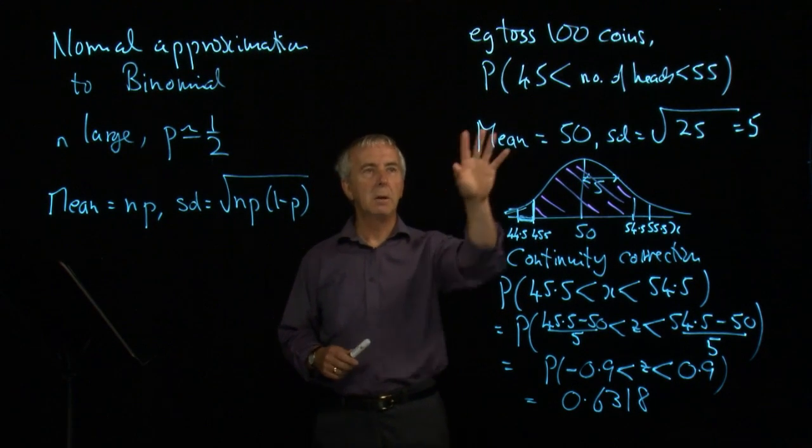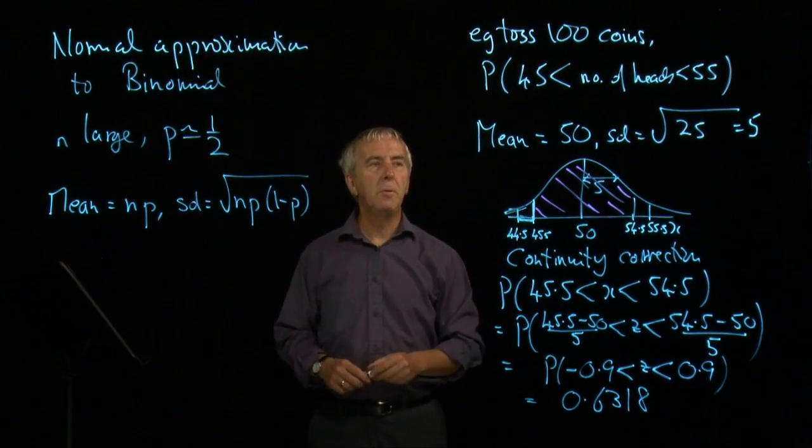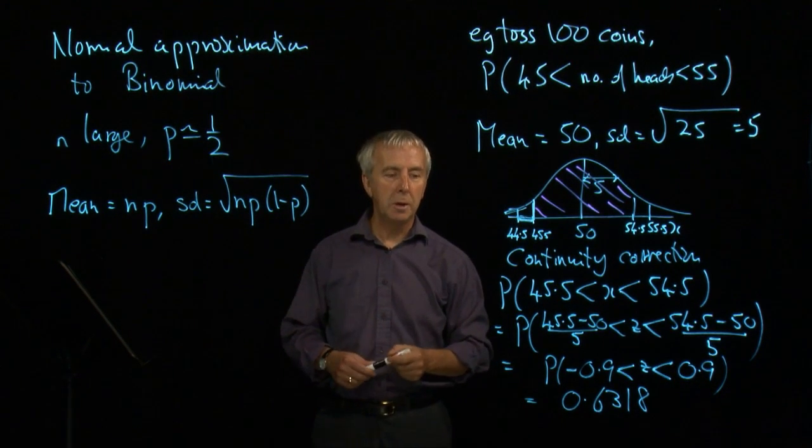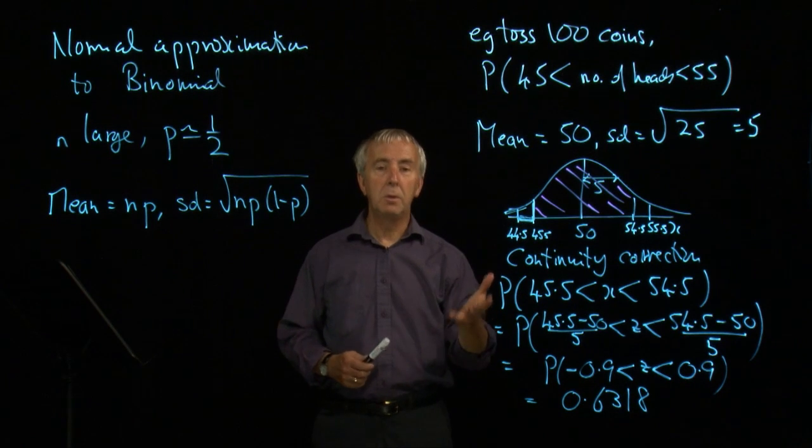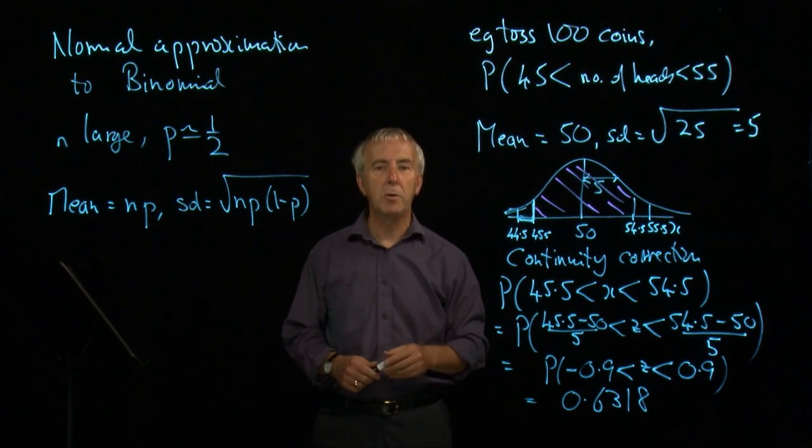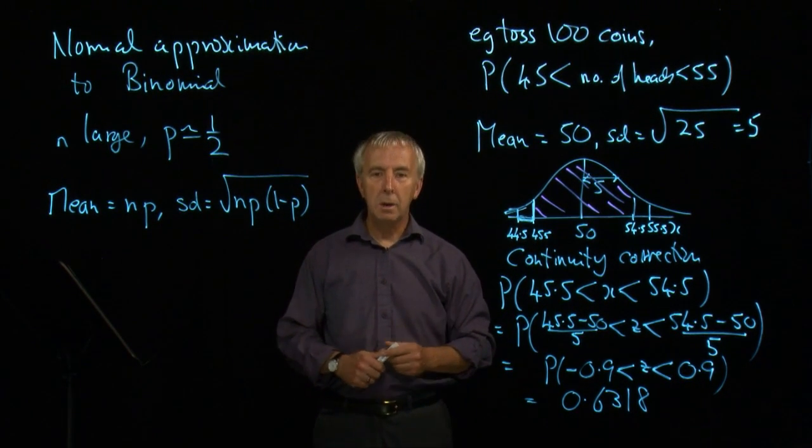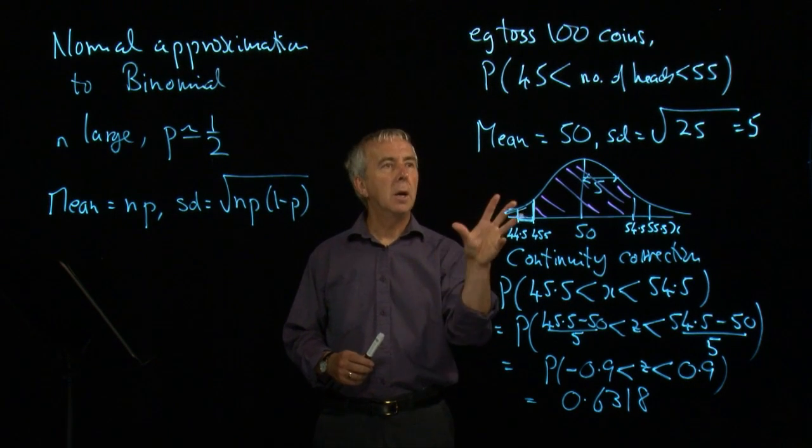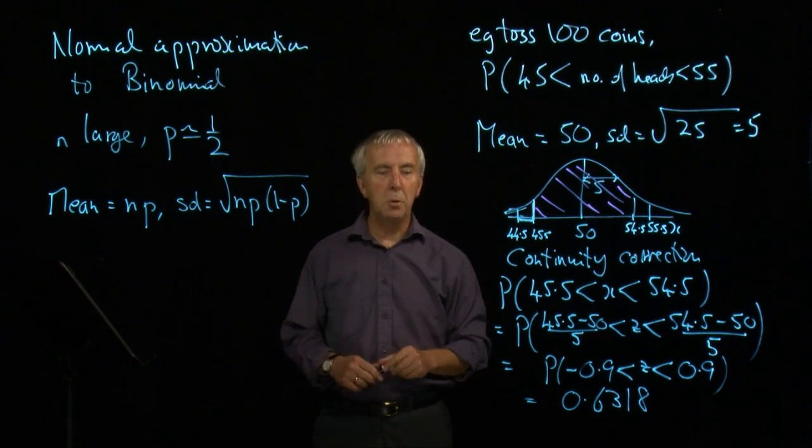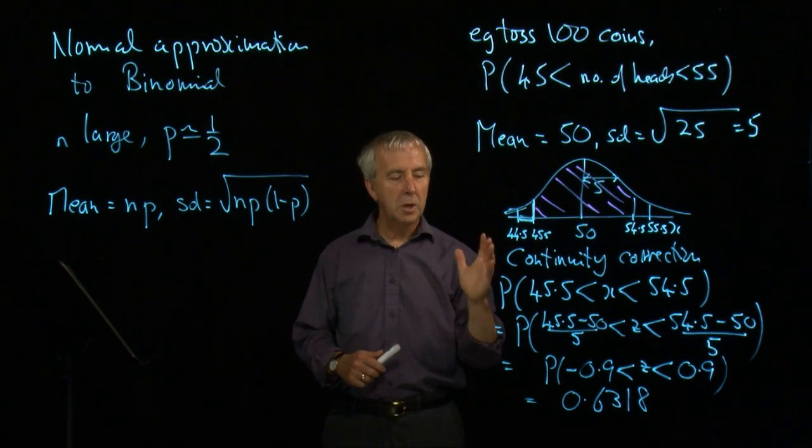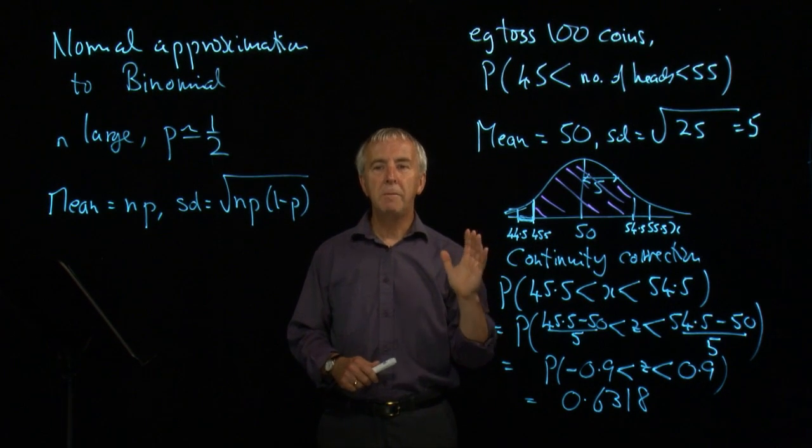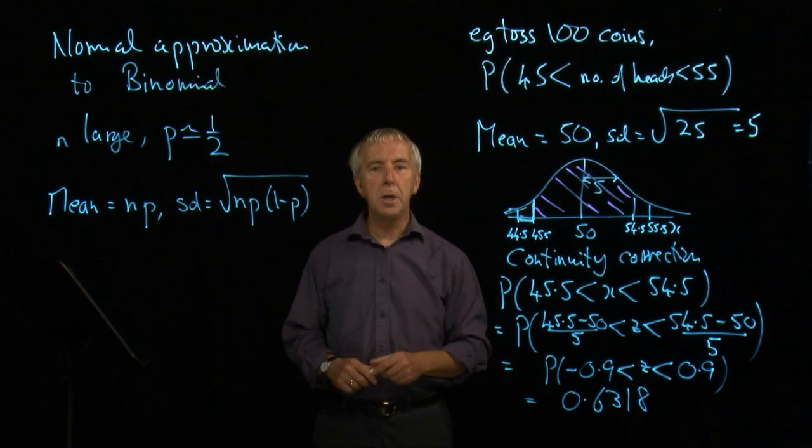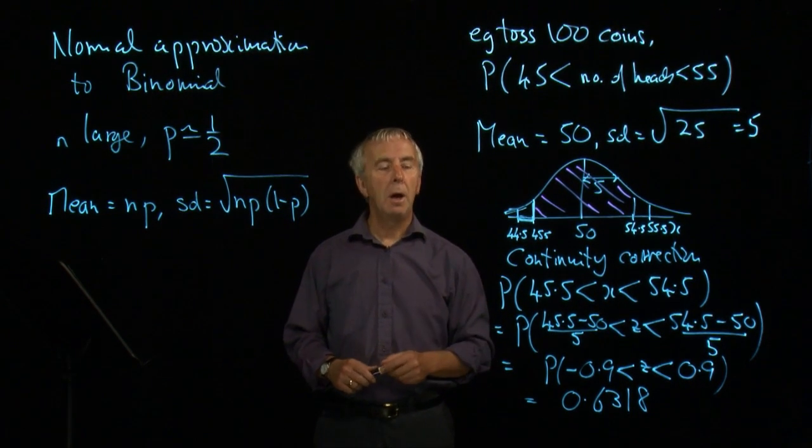So the chance of getting from 46 to 54 heads when I toss 100 coins is about 63%. The exact answer would be very similar. This is a very good approximation. But it would take an inordinate amount of time to calculate doing nine separate binomial calculations. So this approximation is a very useful one as long as the probability p each time is quite near a half.